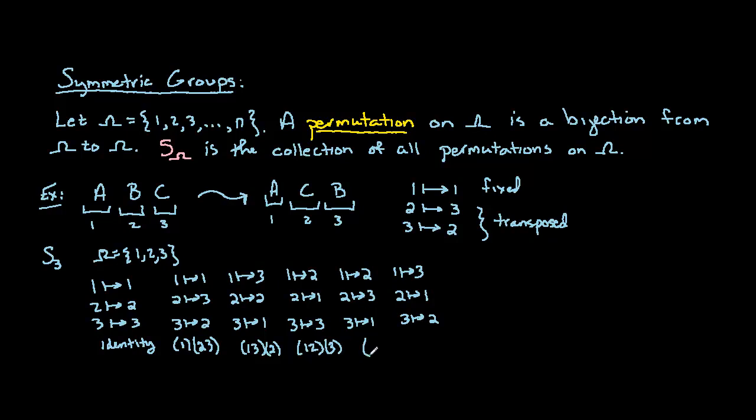Second to last here, we could have the 3 cycle, 1, 2, 3. So what this means is that 1 goes to 2, 2 goes to 3, and 3 loops back around to 1. And then lastly, we would have 1 goes to 3, and 3 goes to 2, and then again, 2 sneaks around the outside there and gets mapped back to 1.